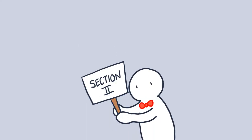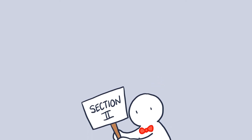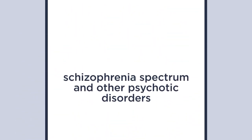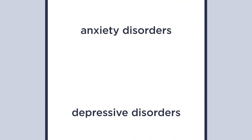Section 1 also addresses the major revisions in the DSM-5 that distinguish it from its predecessors. This then leads into Section 2, which covers the diagnostic criteria and codes. Each chapter in Section 2 represents a broad diagnostic category, such as neurodevelopmental disorders, schizophrenia spectrum and other psychotic disorders, bipolar and related disorders, depressive disorders, anxiety disorders, and obsessive-compulsive and related disorders, to name just a few.